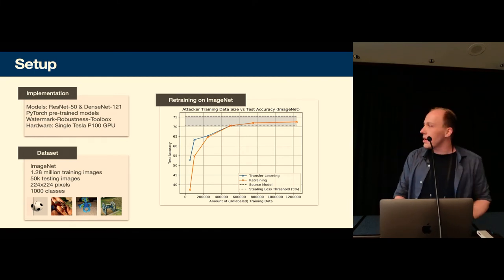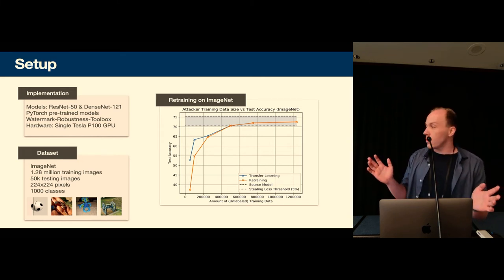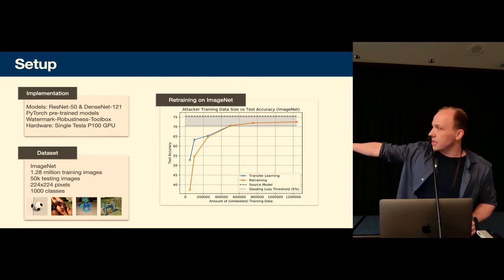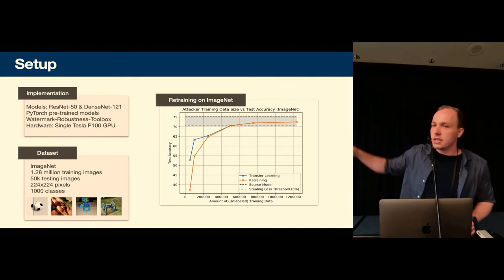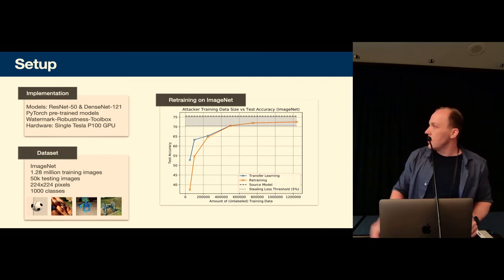So now our empirical analysis starts. So I will only present the results on ImageNet which is a large image classification data set with a thousand classes and 1.28 million images. So what we see first is for the model extraction attacks we need a lot of data to steal a model with a high test accuracy. So on the x-axis we have the amount of unlabeled training data and on the y-axis we have the test accuracy and the blue box is an acceptable quote-on-quote acceptable test accuracy.